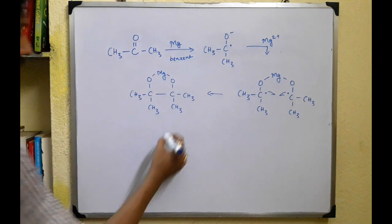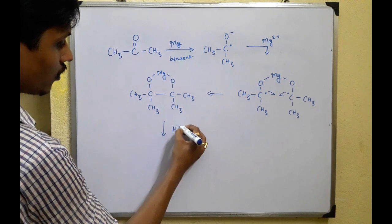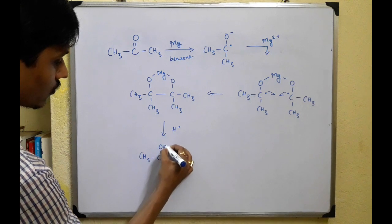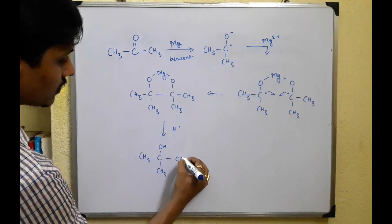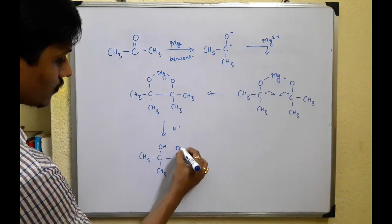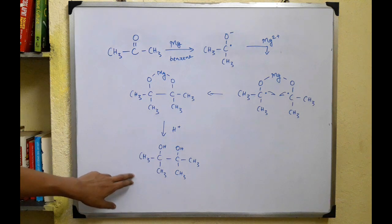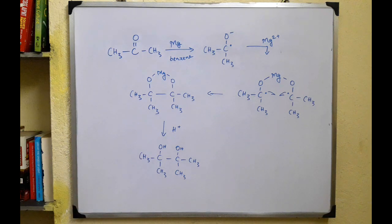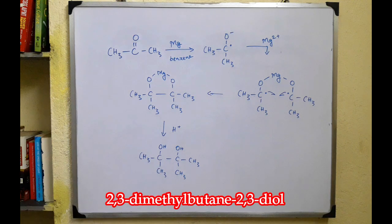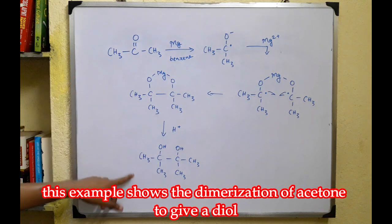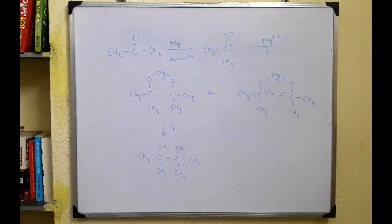Finally, on addition of an acid, the product is a diol. The trivial name of this product is pinacol, and the IUPAC name is 2,3-dimethylbutane-2,3-diol. So if the question arises of how to convert acetone to pinacol, this is the process.